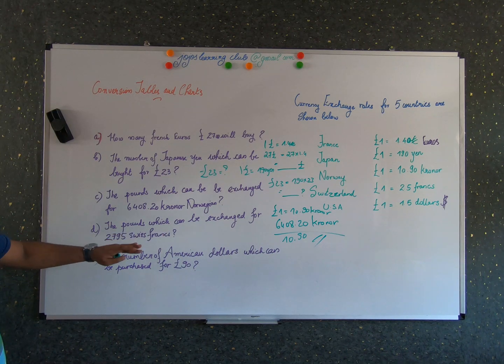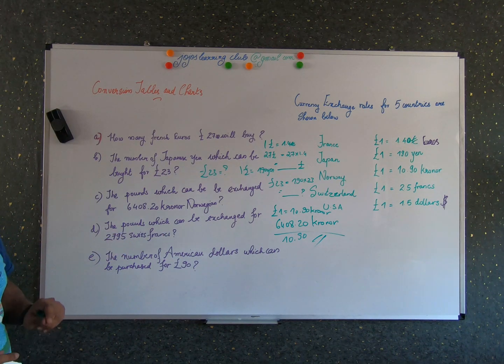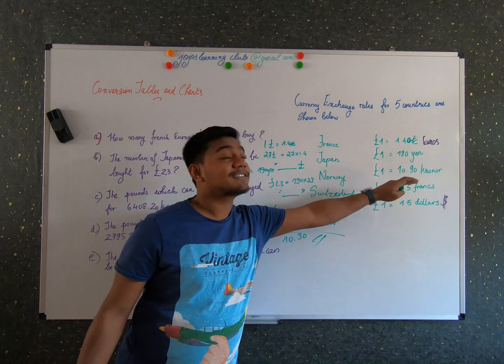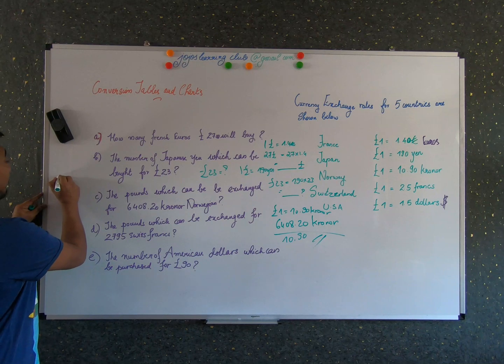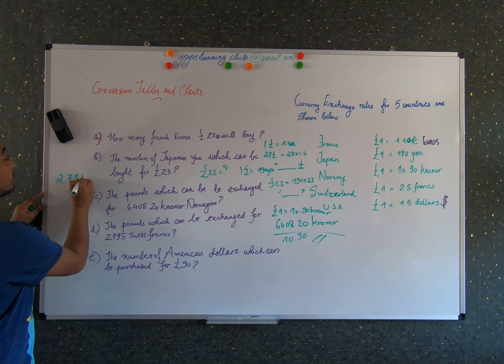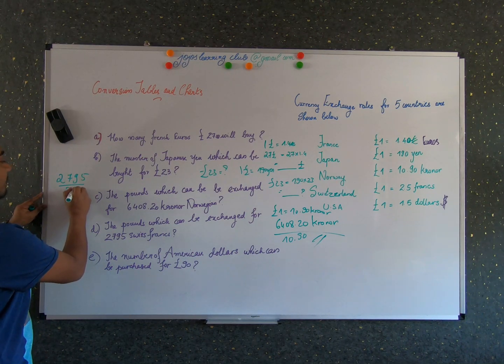So this would be the final answer for the problem number C. Next the problem is the pounds which can be exchanged for 2795 Swiss francs. So we know that one pound is 2.5 francs. So to get the amount of pounds, you just have to divide 2795 by 2.5.